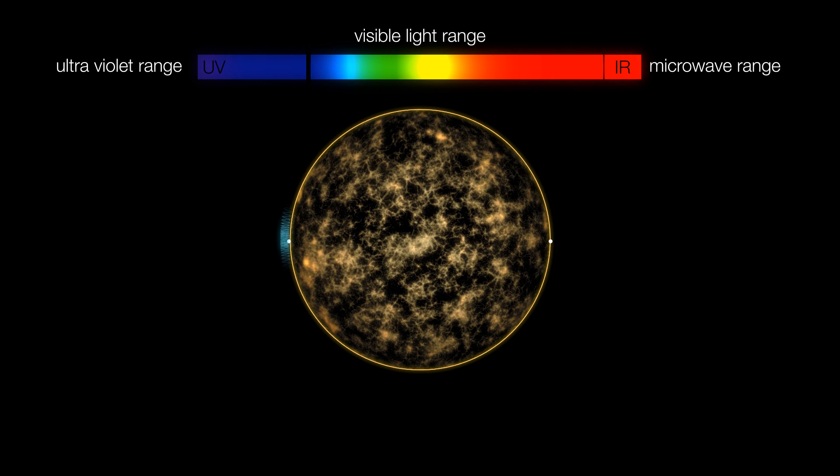A light wave emitted by a star located opposite to us is subject to a gravitational red shift during its multi-billion year journey through the universe. However, what is a gravitational red shift?